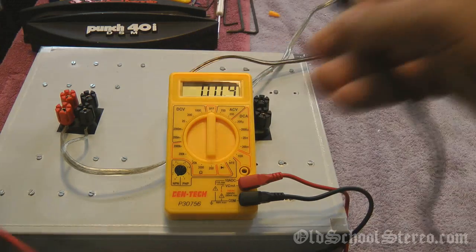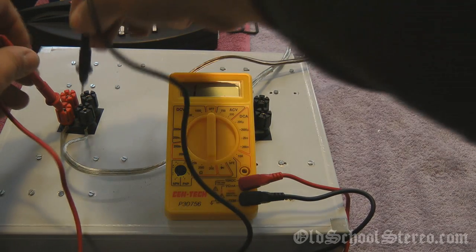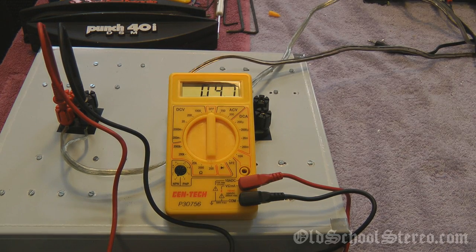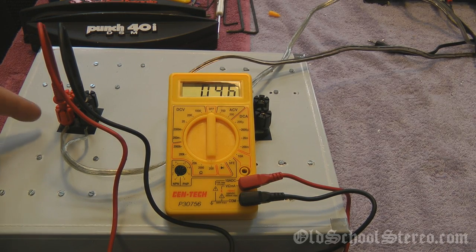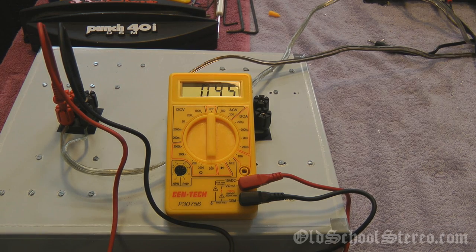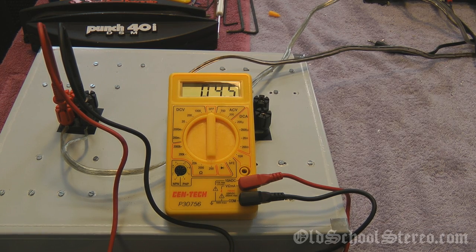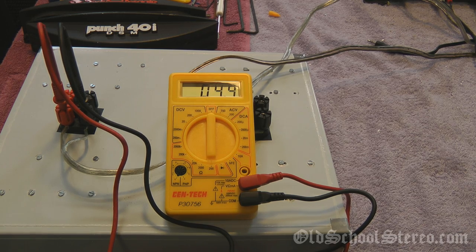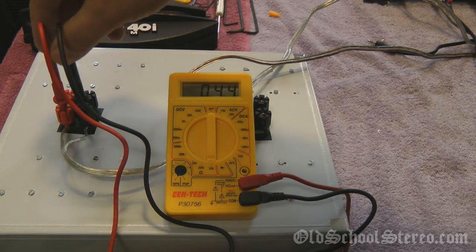So, what I'll do now is measure one of the banks, which these are paralleled together. These two are paralleled together, the two 8 ohms are paralleled together. As you can see, we have 4.5, which taking the factor of the resistance of the wires out is 4 ohms, and we'll test the other channel as well.